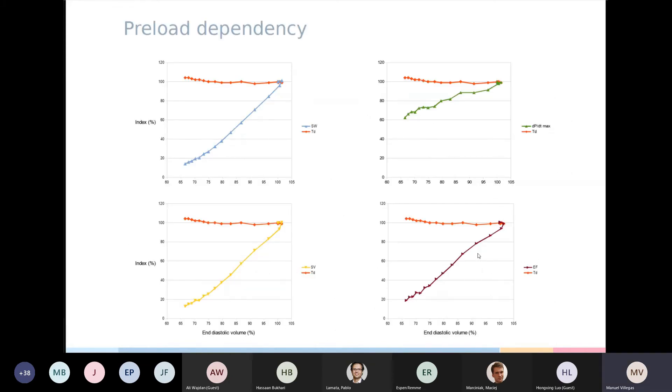As I mentioned before, the preload dependency is an issue with some of the traditional parameters used to evaluate CRT response, and these graphs show the recordings where the volume of the left ventricle was reduced through caval constrictions, allowing us to evaluate the dependency of each index under study. The orange lines in each form represents TD, and we can see that it remains almost constant throughout all changes in diastolic volume, which is the x-axis.